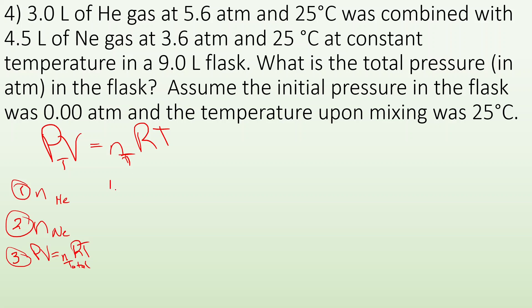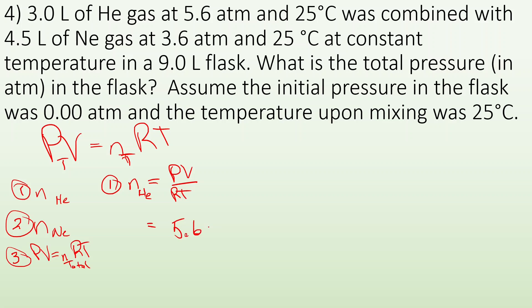First, for helium: moles = PV/RT. That gives me 5.6 atm × 3.0 L divided by 0.08206 × 298 K. I get 0.687 moles of helium.